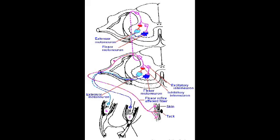In a similar way to our stretch reflex, we have both a primary and an inhibitory response that are occurring, but the actual response is slightly different when we get to our central nervous system level. We define a flexor reflex as a polysynaptic reflex, as opposed to our stretch reflex which is monosynaptic.